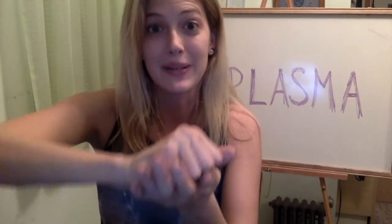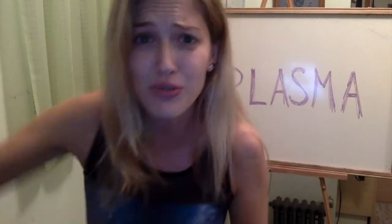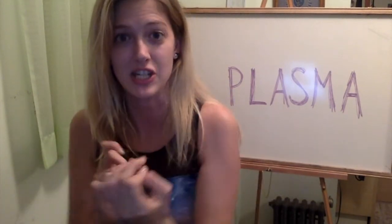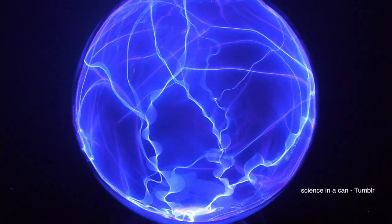What starts to happen through this constant heat and temperature is that the atoms begin to become ionized. Ionized just means they're transforming into ions, which means there's an unequal amount of electrons to protons. These electrons are being stripped from the atoms and molecules, and because of this, the material starts to change and it turns into something called plasma.